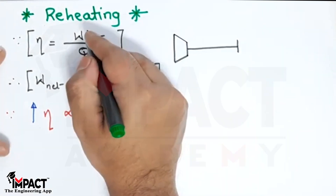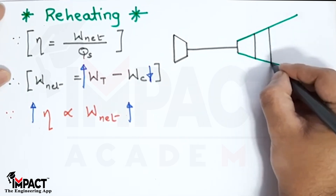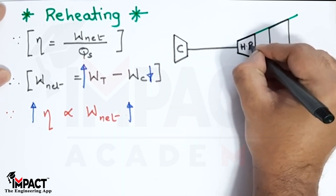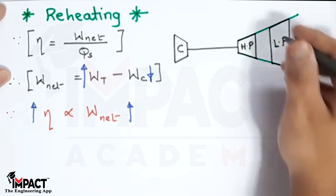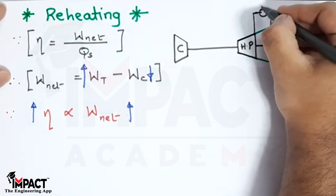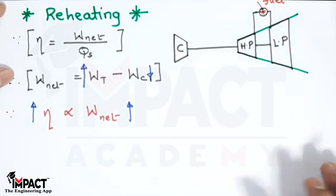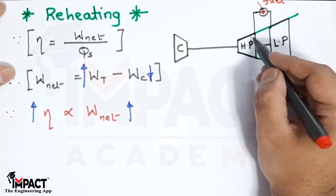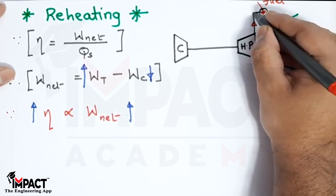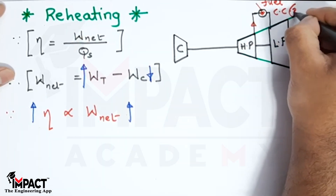When drawing the reheating cycle, you need to draw two turbines. We have the compressor, then the HP (high pressure) turbine, and the LP (low pressure) turbine. Both turbines are connected on a common shaft. Between the HP and LP turbines there is a combustion chamber, where fuel is injected in an open cycle gas turbine, or heat is transferred via a pipeline parallel to the gas in a closed cycle gas turbine.